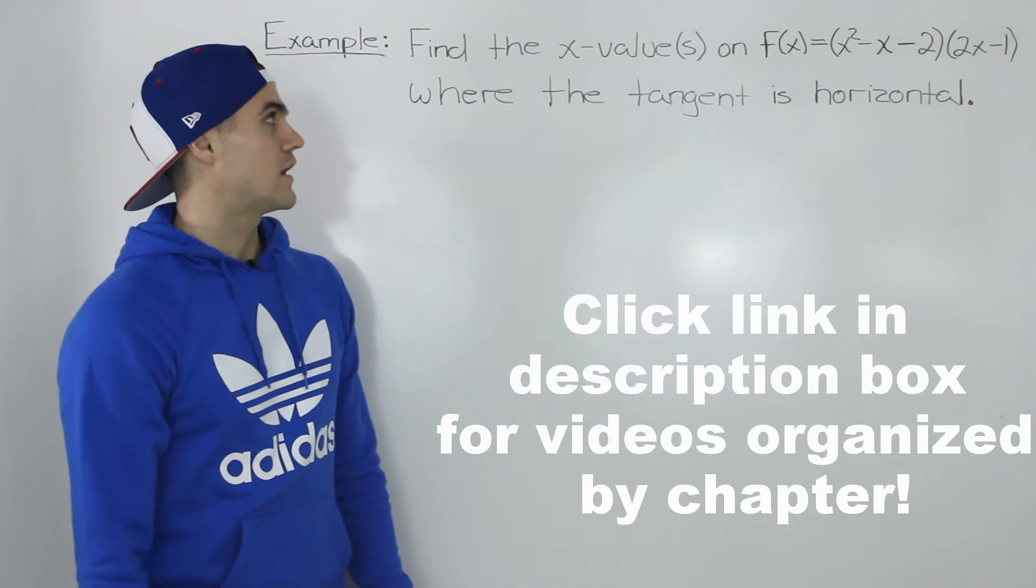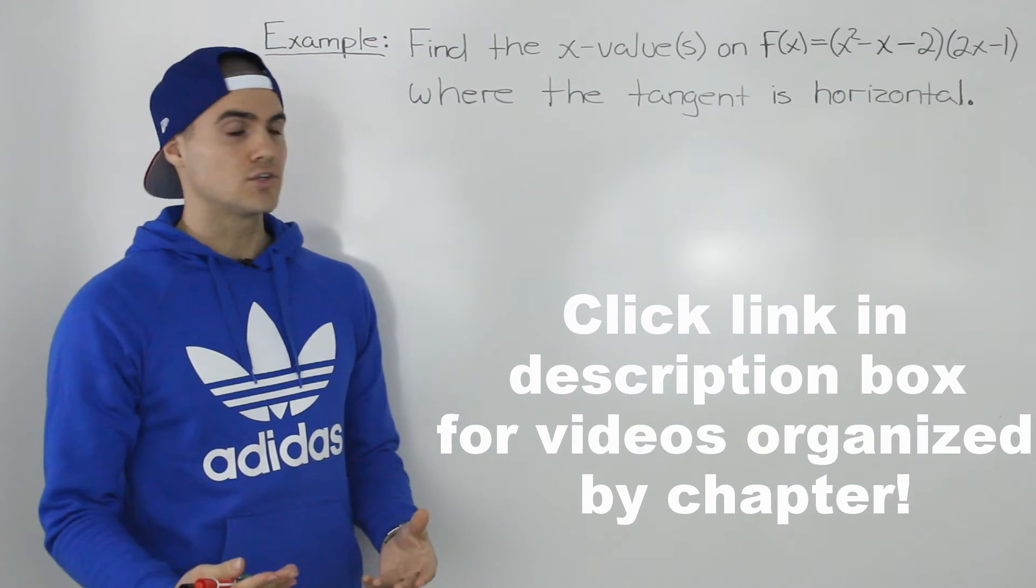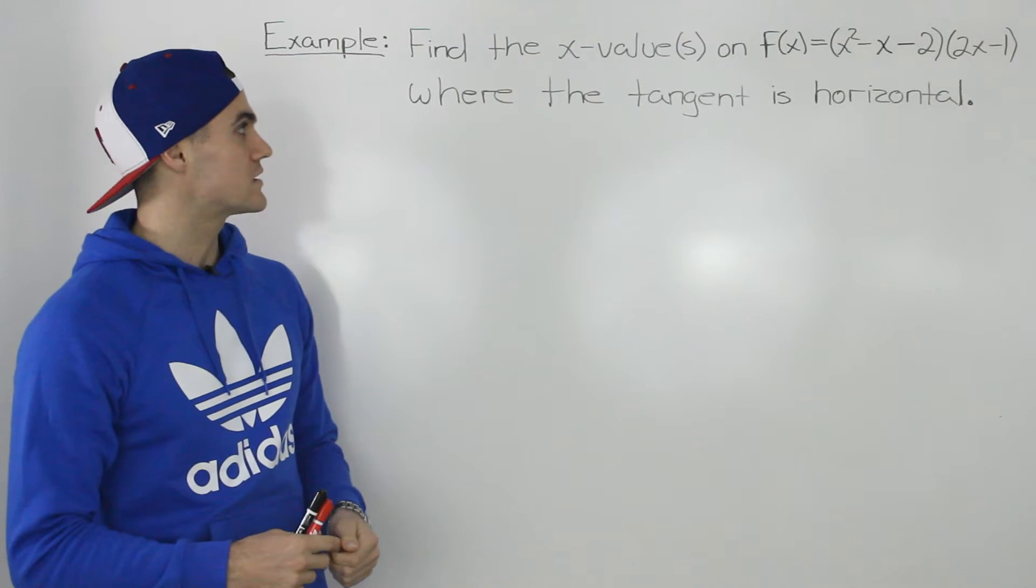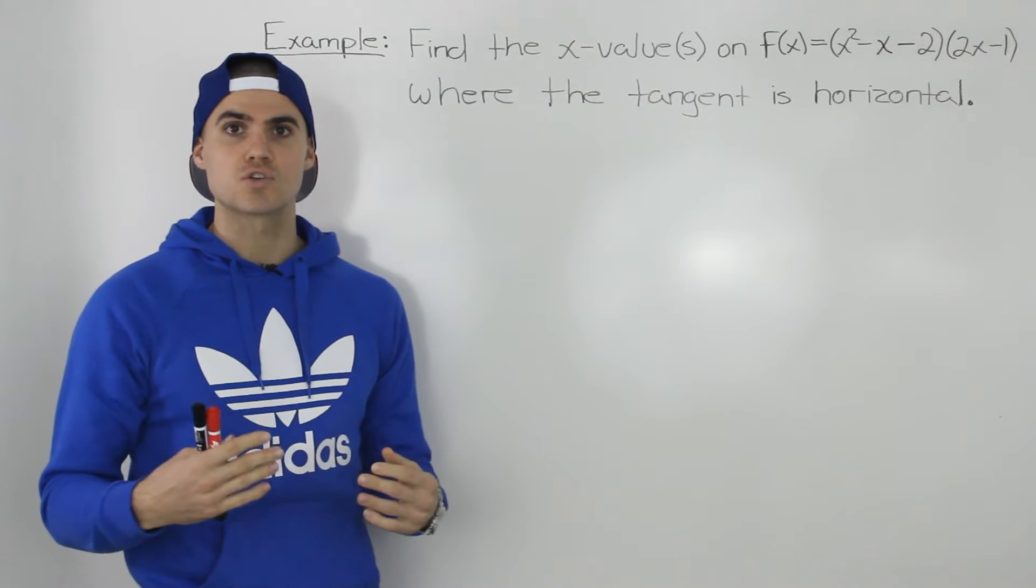Moving on to the next example, we have to find the x value or the x values on the function x squared minus x minus 2 times 2x minus 1 where the tangent is horizontal.